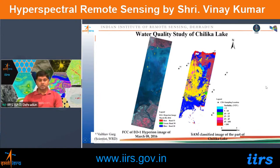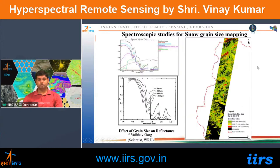Water quality studies were performed using Hyperion data validated for AVIRIS-NG data. Reflectance spectra were collected from ground spectroradiometers at different locations, and turbidity was calculated across the Chilika lake area. Snow grain size mapping was also carried out, showing how grain size varies with spectral signatures across different areas.